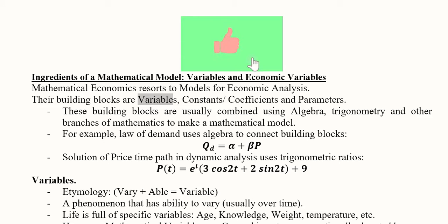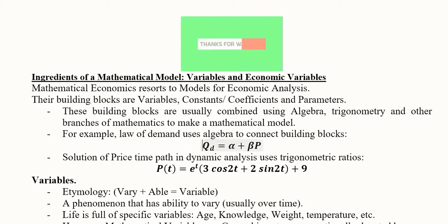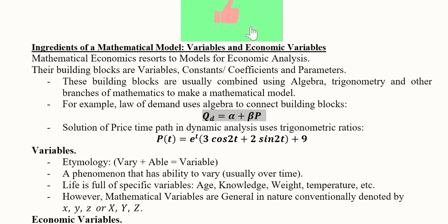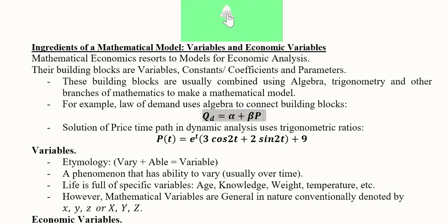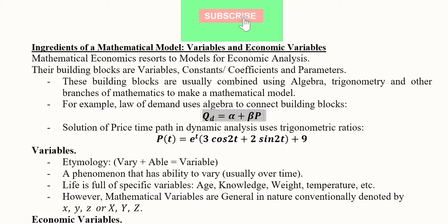For instance, if you look at this equation of the law of demand, we have variables in it, we have coefficients and we have constants. The variables Qd and P, and beta and alpha are playing their role as a constant and as a coefficient. They are also parameters, because their values are limited with a certain restriction.